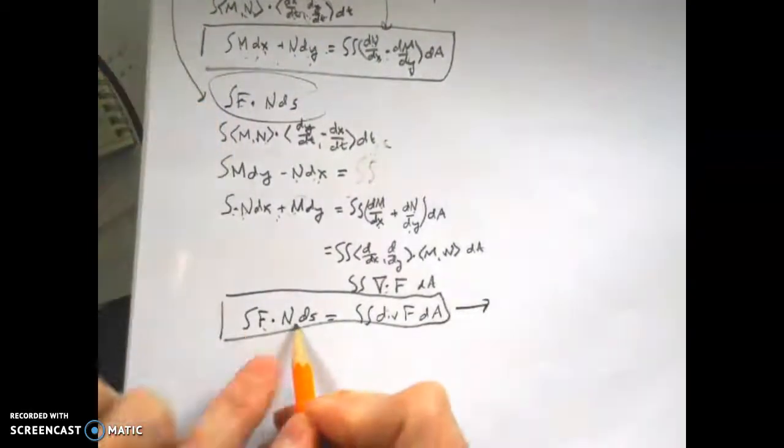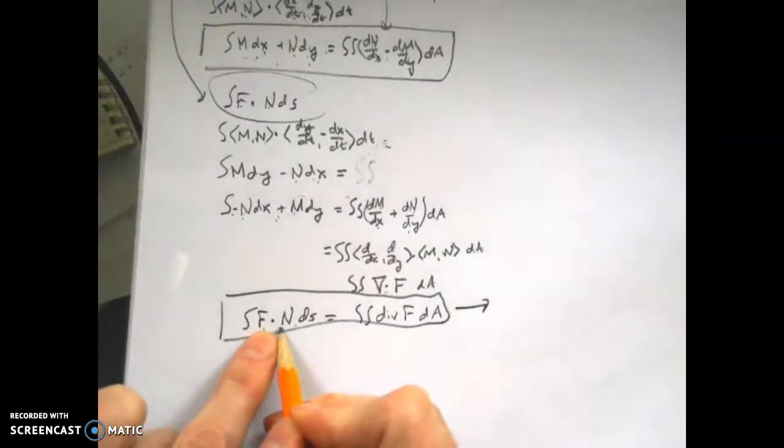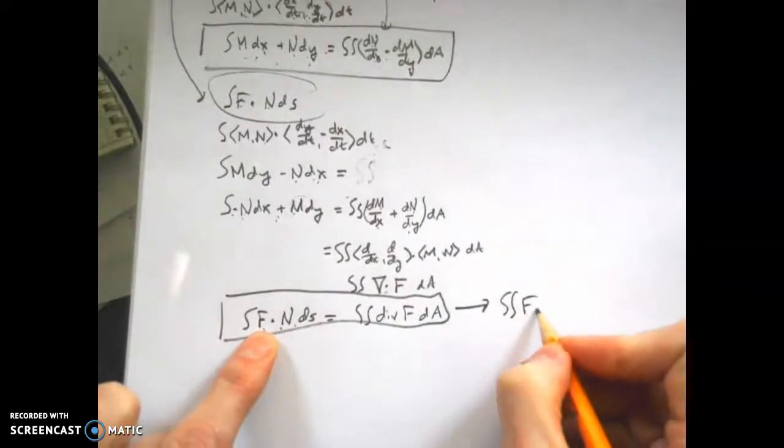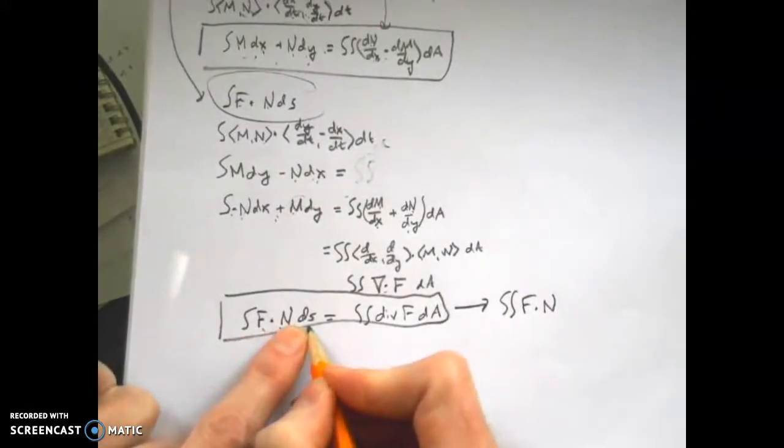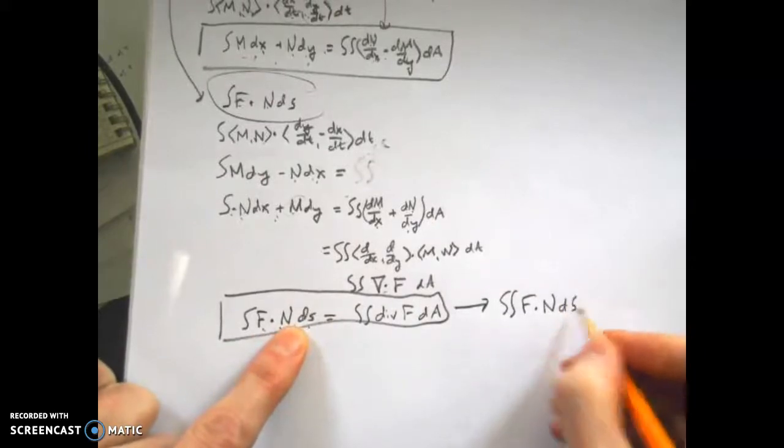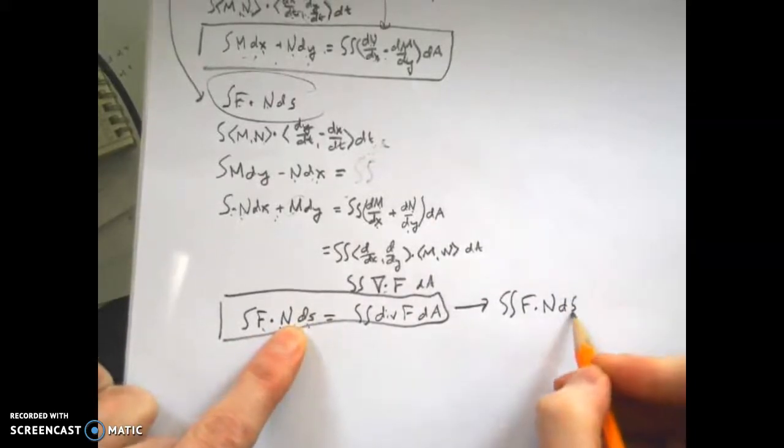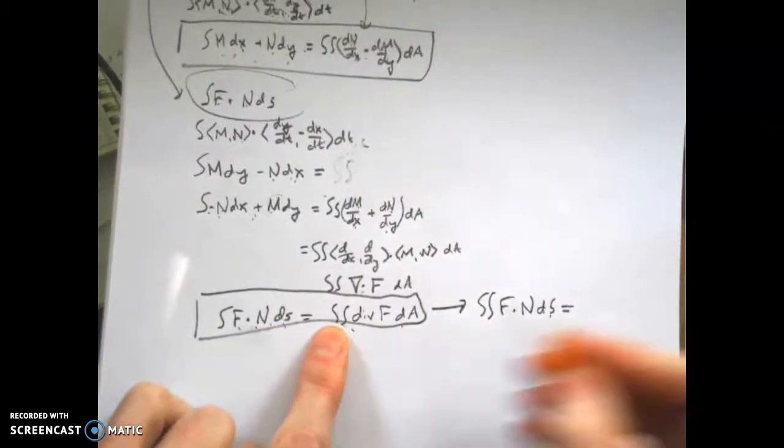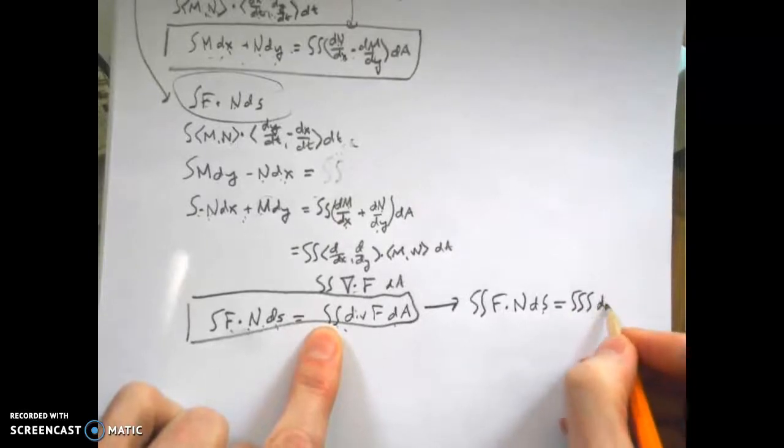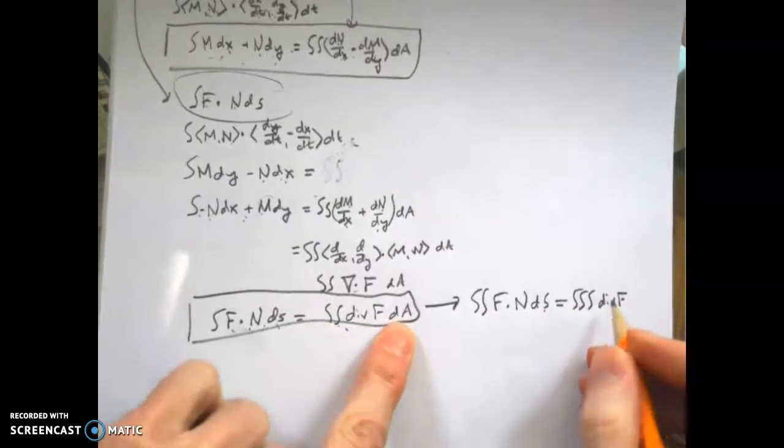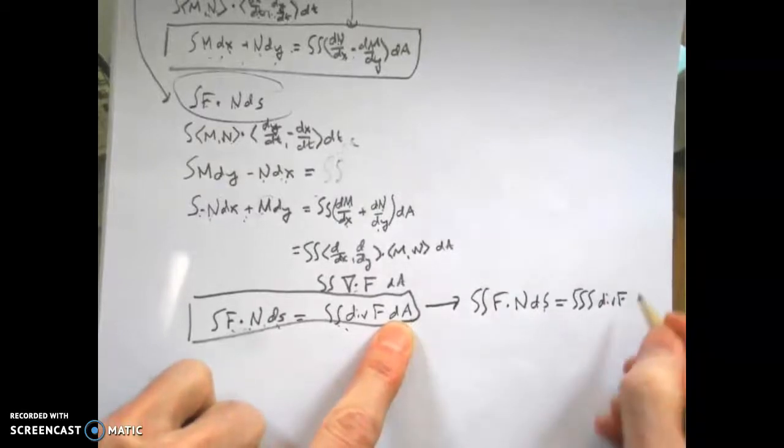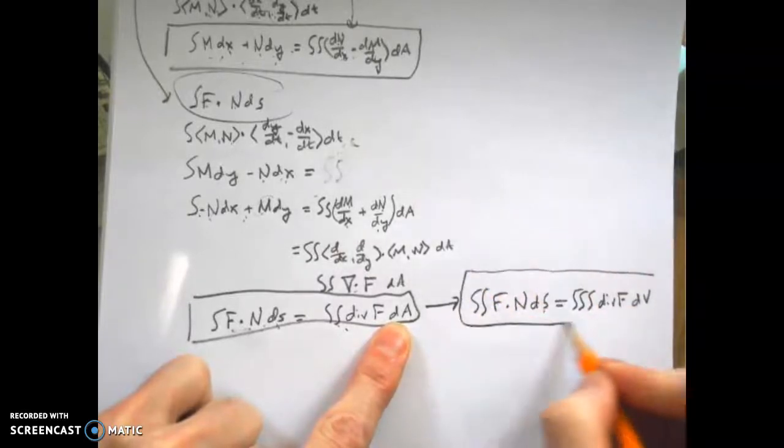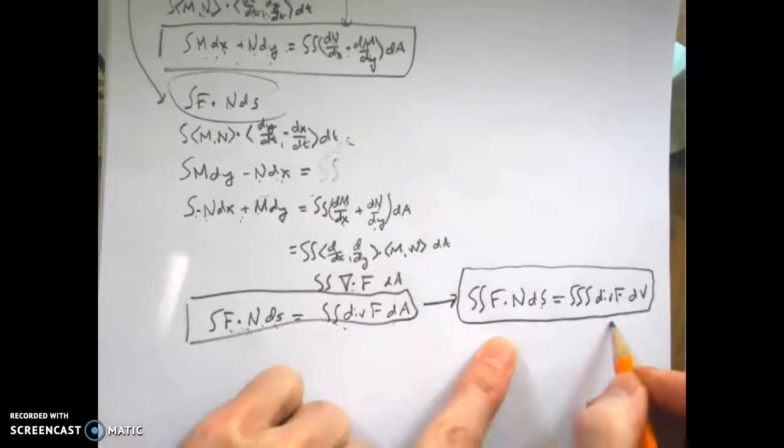So what we have here, this is another version of Green's theorem. And if we take this thing right here, F dot N dS, we make this three dimensions instead of two. We need to make it a double integral. Now it's F dotted with N. Instead of over d little s, it's now over d big S. Little s represents a curve. Big S represents a surface. And now equals, and on this side, we have to make it three, a triple integral. The divergence of F, instead of over a region, it's now going to be over a volume, dV. And this right here is the divergence theorem.